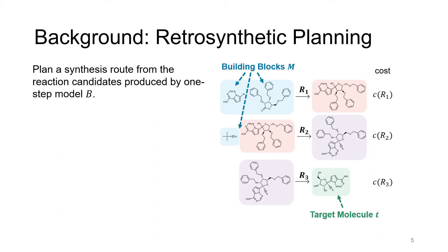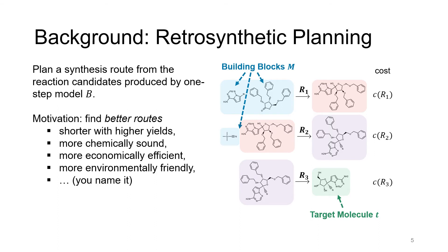The previous works leveraged planning algorithms such as Monte Carlo Tree Search and Proof Number Search to tackle this problem. However, there could be multiple solutions, and it will be very hard to tell which ones are better. Motivated by this, we want to take the solution quality into account when we try to formulate this planning problem. There could be many criteria for a better route. It could be shorter with higher yield, or it could be more chemically sound, or you name it. In our paper, we assume that whatever criteria we are using, it can be summarized in the predicted cost value of the reactions.